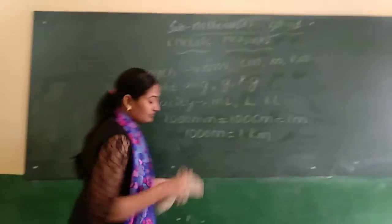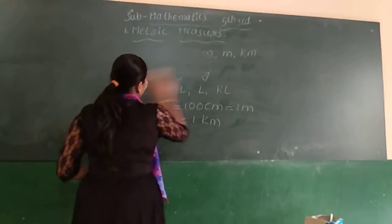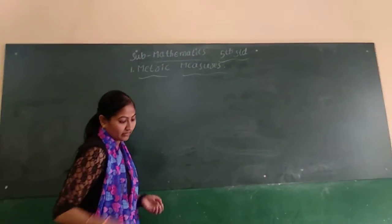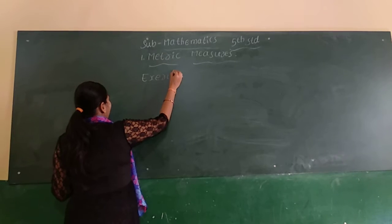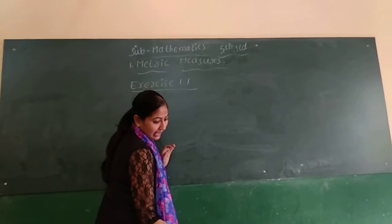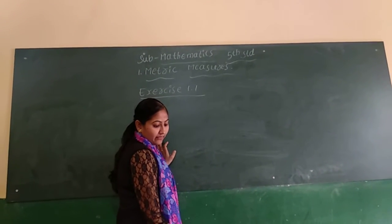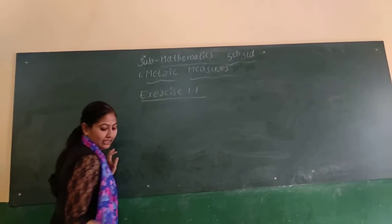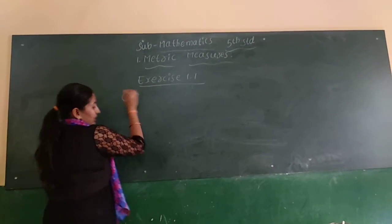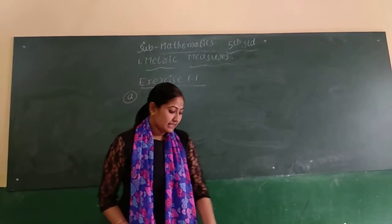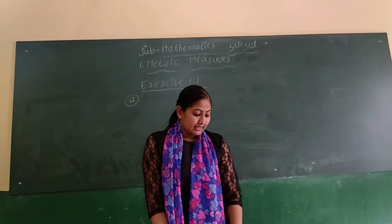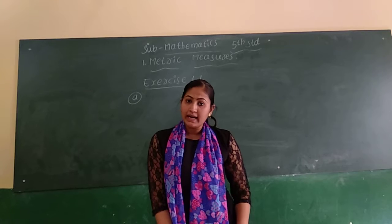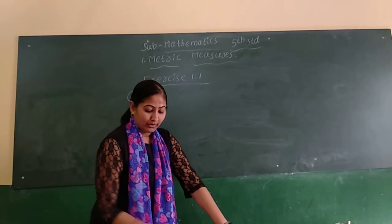Let us see some examples from exercise 1.1. First one: convert the following as indicated. Problem A: convert 6245 cm into HM (hectometer). Centimeter is a smaller unit and hectometer is a bigger unit, so we need to convert from smaller to bigger.